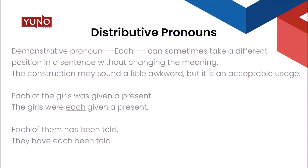There is one more thing to discuss about distributive pronouns, especially 'each.' It is not necessary that 'each' is stuck at one particular position at the beginning of the sentence. In fact, 'each' can take multiple positions in a sentence, and the verb changes accordingly. But the connotation of 'each' will always be singular, irrespective of where it is placed — though such constructions may sound a little awkward. They are grammatically correct and acceptable usage.